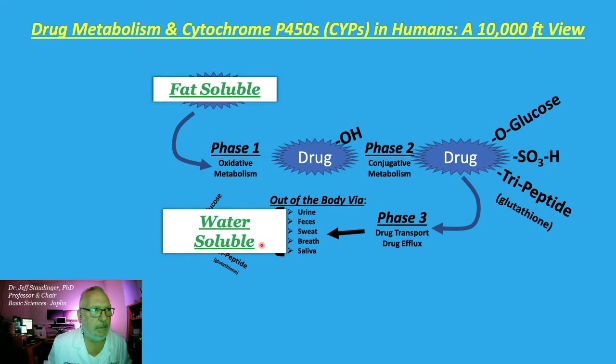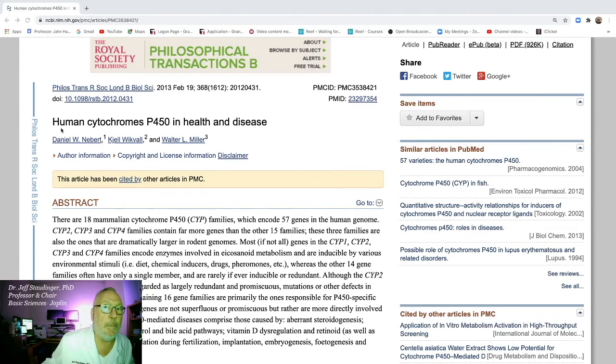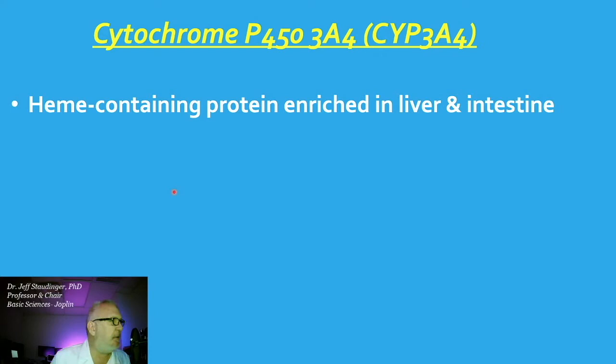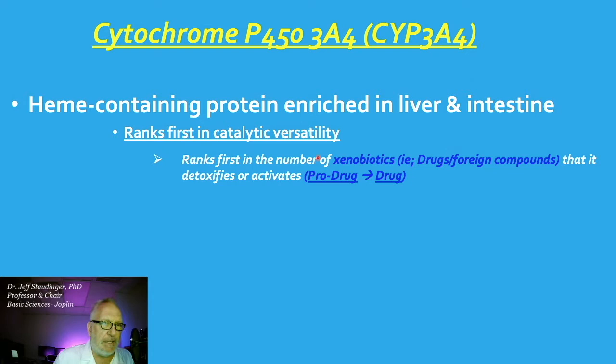Let's talk about CYPs — click on the link for a very informative review article: Human Cytochromes P450 in Health and Disease. CYP3A4 is a heme-containing protein enriched in liver and intestine. It ranks first in catalytic versatility and also ranks first in the number of xenobiotics, drugs, and foreign compounds that it detoxifies or activates.